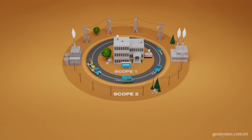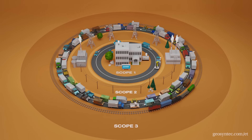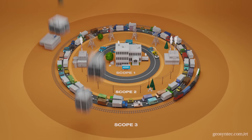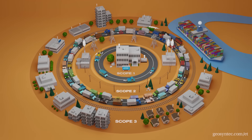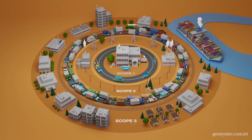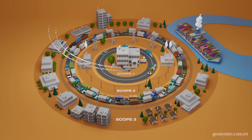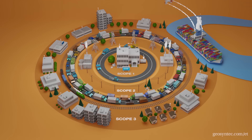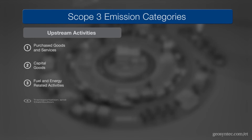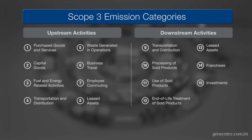Scope 3 greenhouse gas emissions include anything associated with operations, including emissions generated while producing raw materials or delivering items to the site, emissions during midstream pipeline transportation, emissions generated while distributing products and during their end uses. Scope 3 emissions fall into 15 well-defined categories.